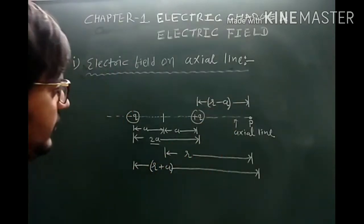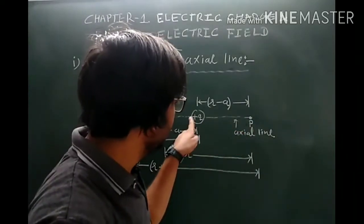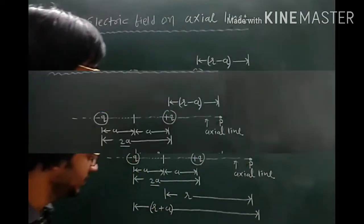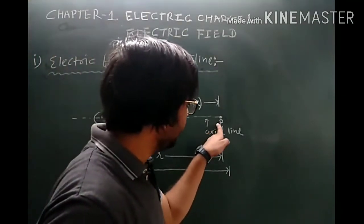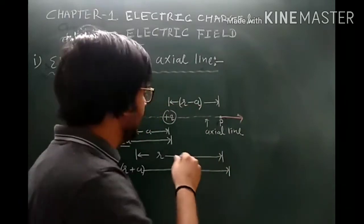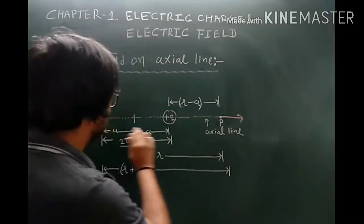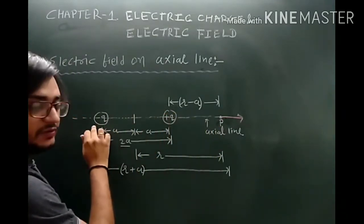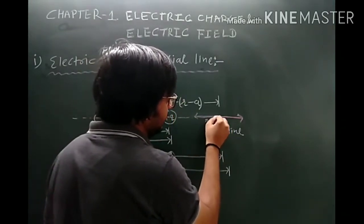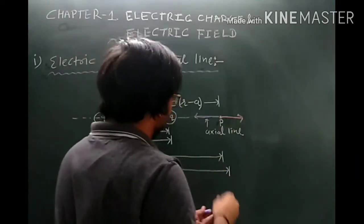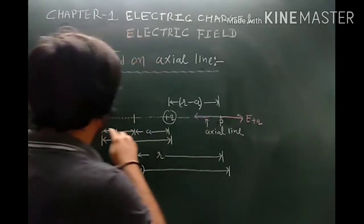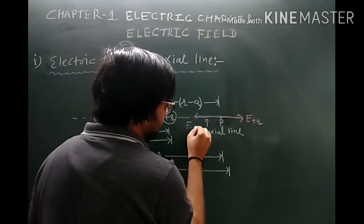Now we want to calculate the electric field at point P due to charge plus Q and due to charge minus Q. The electric field produced at point P due to the charge plus Q is directed outward. The electric field produced at point P due to the charge minus Q is directed inward, because it is negative. So both fields are in opposite directions — E plus Q and E minus Q.